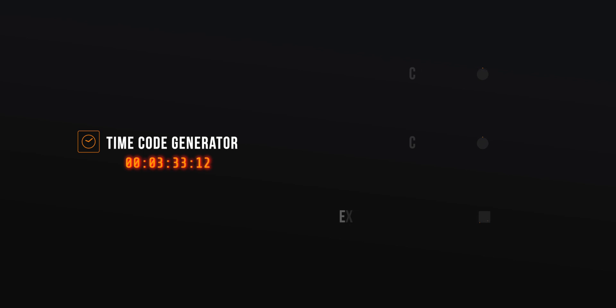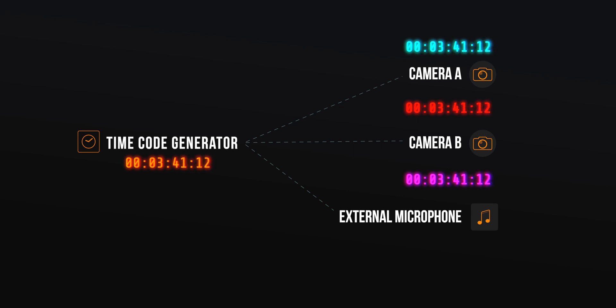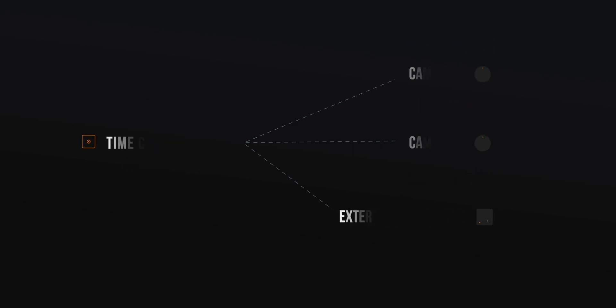So first of all, what is timecode? Timecode is basically nothing else but a continuously running, really precise clock. And you need a timecode generator to actually start a unified clock on all of your devices. So now that our timecode generator has generated a unified time for us, we need to synchronize all of our devices with it. And once we've done that, we can actually shoot with as many cameras and external audio sources as we like because they're all synced perfectly to each other. It's literally just a second and a click in post and everything is perfectly synchronized.